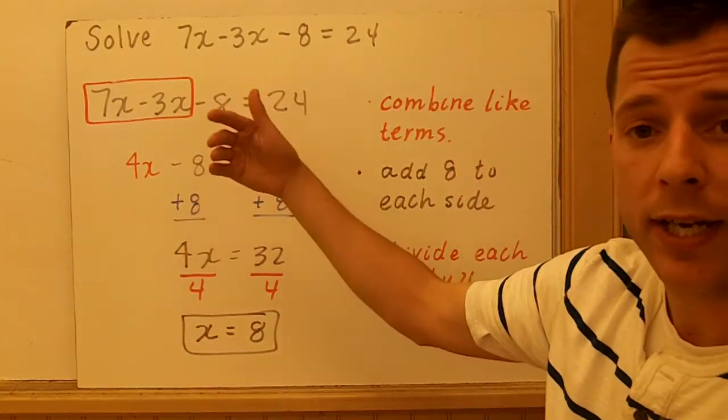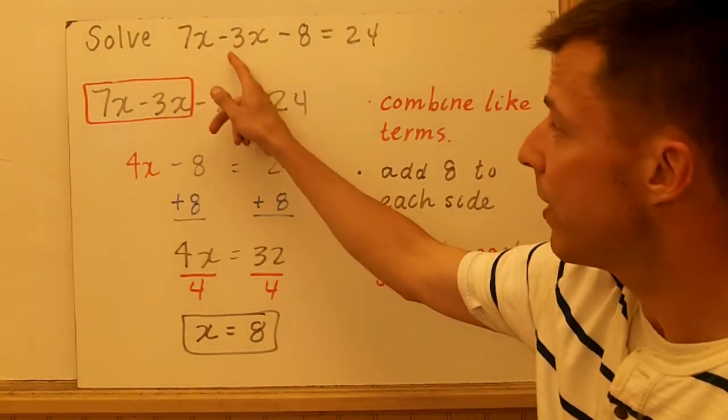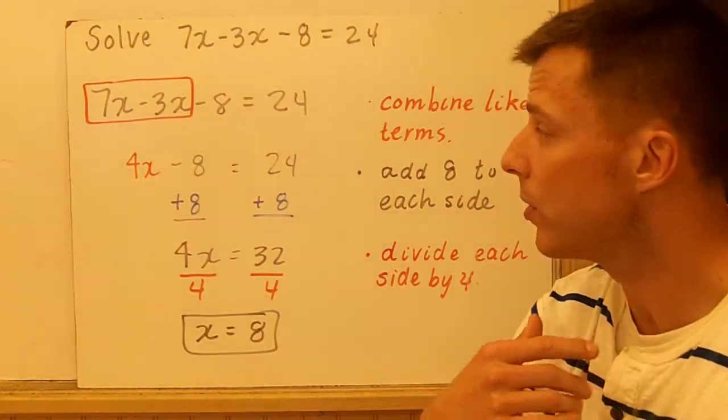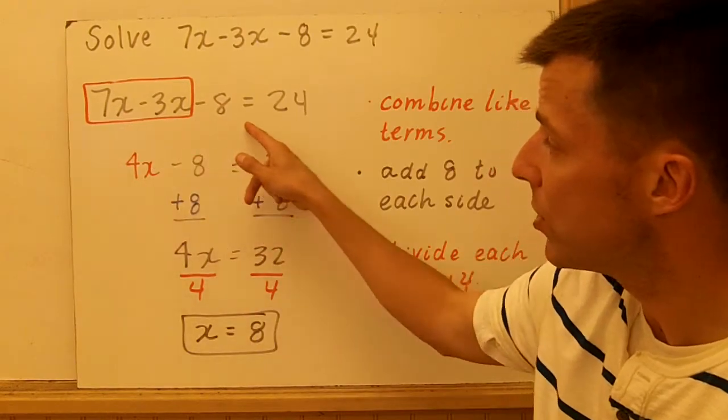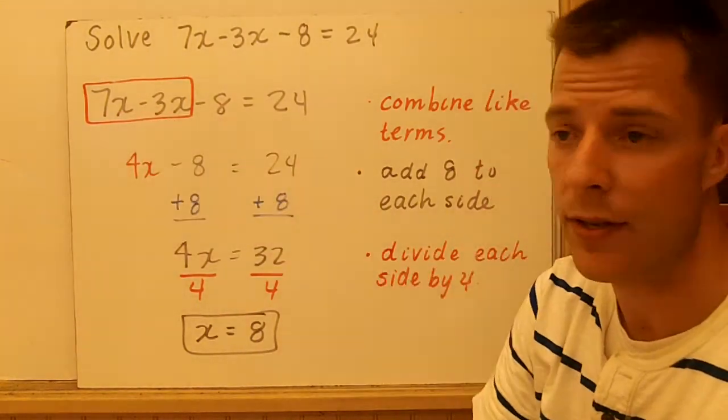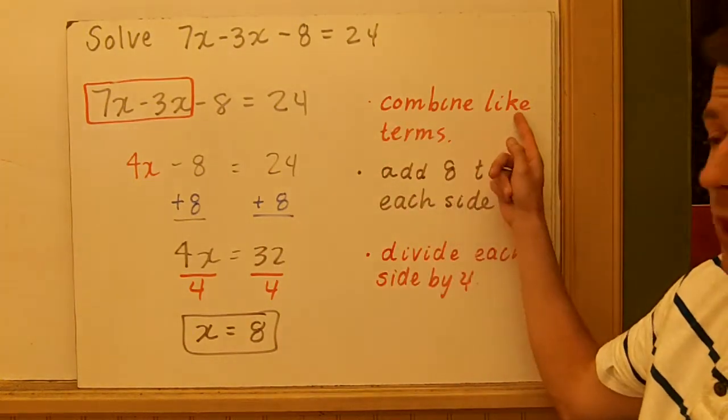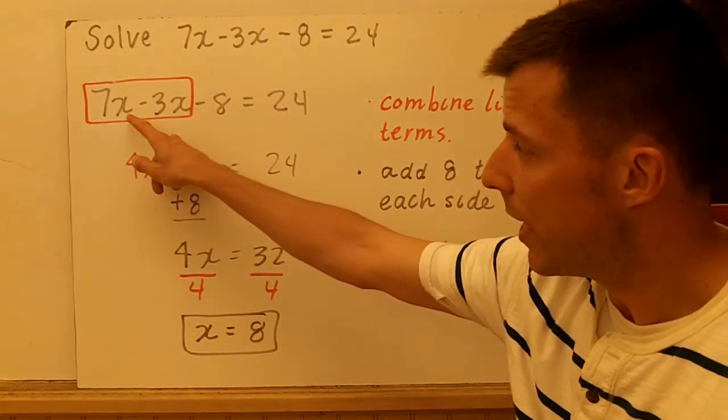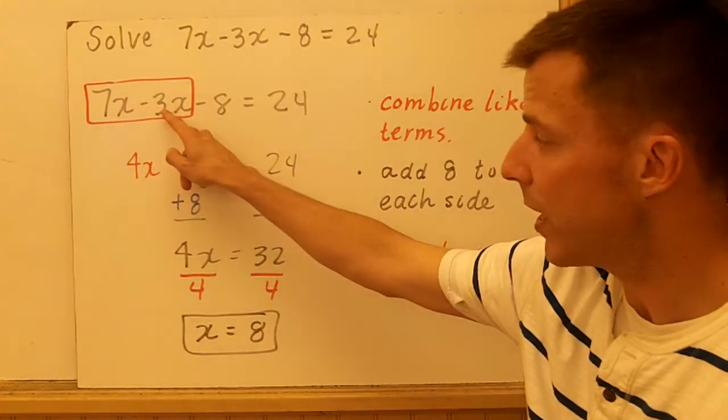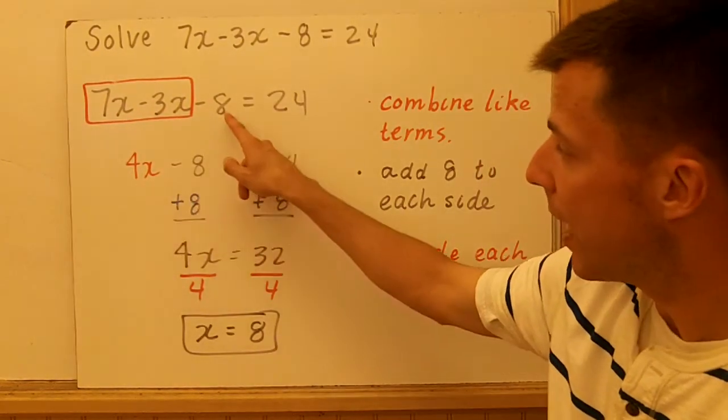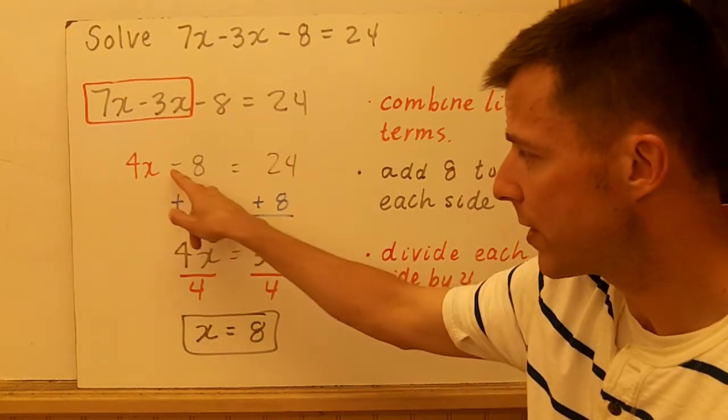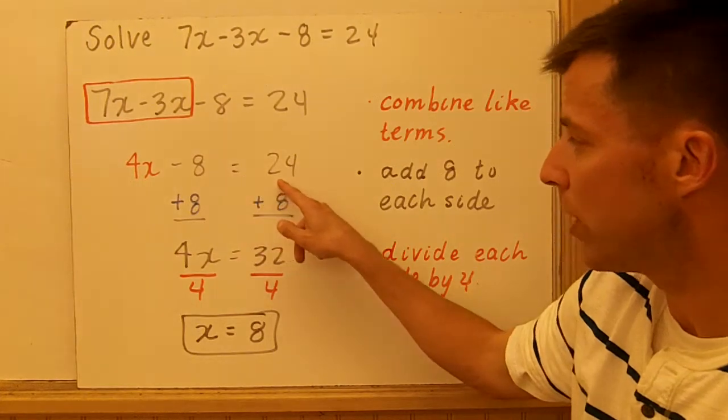In the next example, we're going to solve 7x minus 3x minus 8 equals 24. I'm going to rewrite my equation down here. I notice I have two terms with x's in it. Step number one is to combine like terms. I take the 7x and subtract off 3x's, which gives me 4x's. Everything else comes down. So my new equation is 4x minus 8 equals 24.